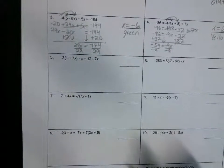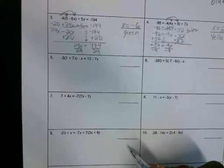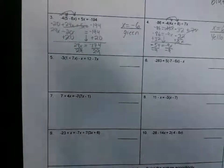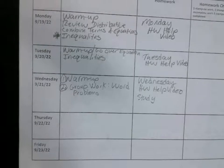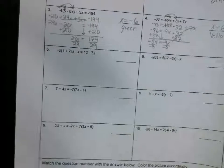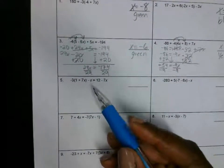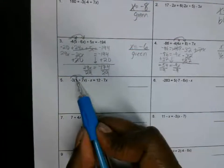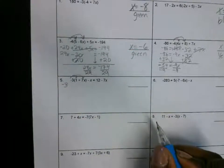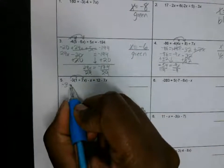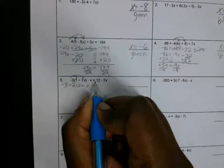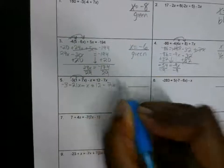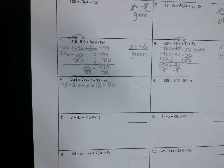Let's look at this sheet. I'm going to do two problems for you — I'm going to do five and six. Please make sure you're actually doing these on your own so you'll know. So let's do five. What do we do first to solve the equation for number five? Distributive property. So that means we're going to multiply negative three times both numbers in the parentheses. What's negative three times one? Negative three. What's negative three times a positive seven x? Negative 21x. Bring down the minus x, the equal sign, and 12 minus 7x. Any questions about the first step?